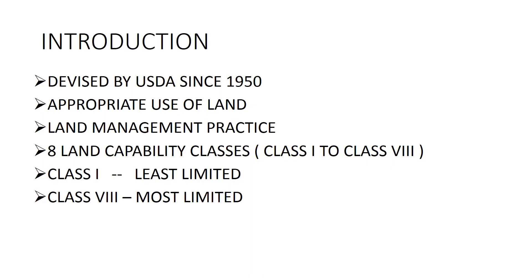Land capability classes is not a new thing. It was devised by USDA since 1950. USDA means United States Department of Agriculture. What is the necessity of land capability classes? Land capability classes will help you choose which land is appropriate for what — where we should grow agricultural crops, where we should grow forestry, where we should go for pasture land. You can also decide land management practices like tillage operation and watershed management using land capability classes.